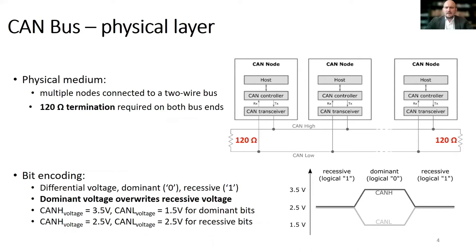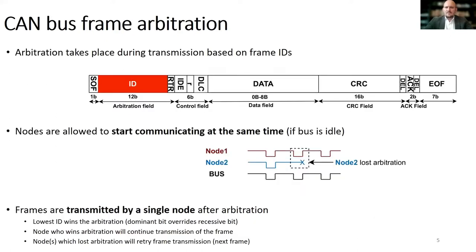The CAN bus is a differential bus which uses two lines, CAN high and CAN low, connected via 120-ohm terminal resistors. The bus has two states: a recessive state where the two CAN lines have the same voltage level, and a dominant state in which they differ by about 2 volts. The dominant state of the bus is able to override the recessive state. This physical layer allows two nodes to start broadcasting at the same time, and since the dominant voltage will override the recessive voltage, the node that writes the ID with the lower value will be allowed to continue writing on the bus while the rest of the nodes will lose the arbitration.